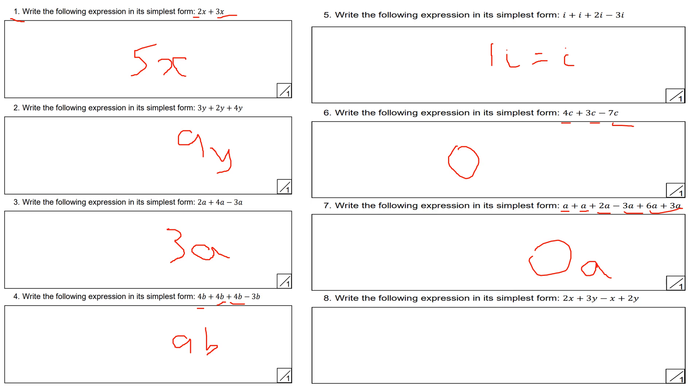Question number 8, the last one for today. Write the following expression in simplest form: 2x plus 3y minus x plus 2y. Collect all the x's together: 2x minus x is just 1x or x. Then 3y plus 2y gives plus 5y. So you have x plus 5y, or 5y plus x. That's the answer.